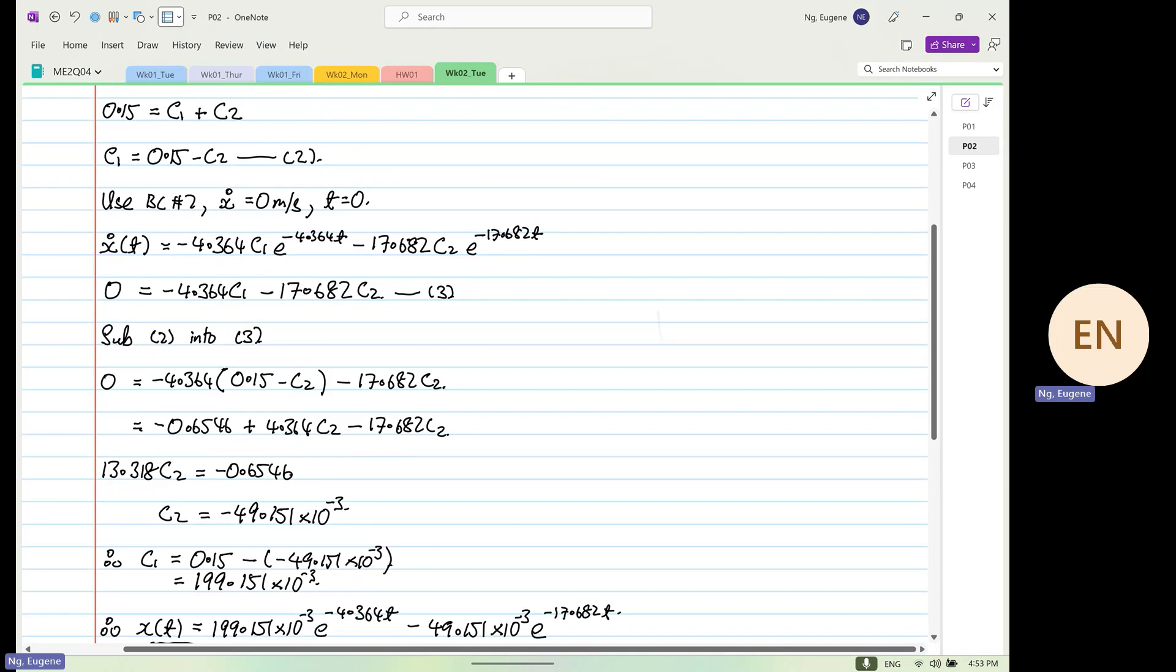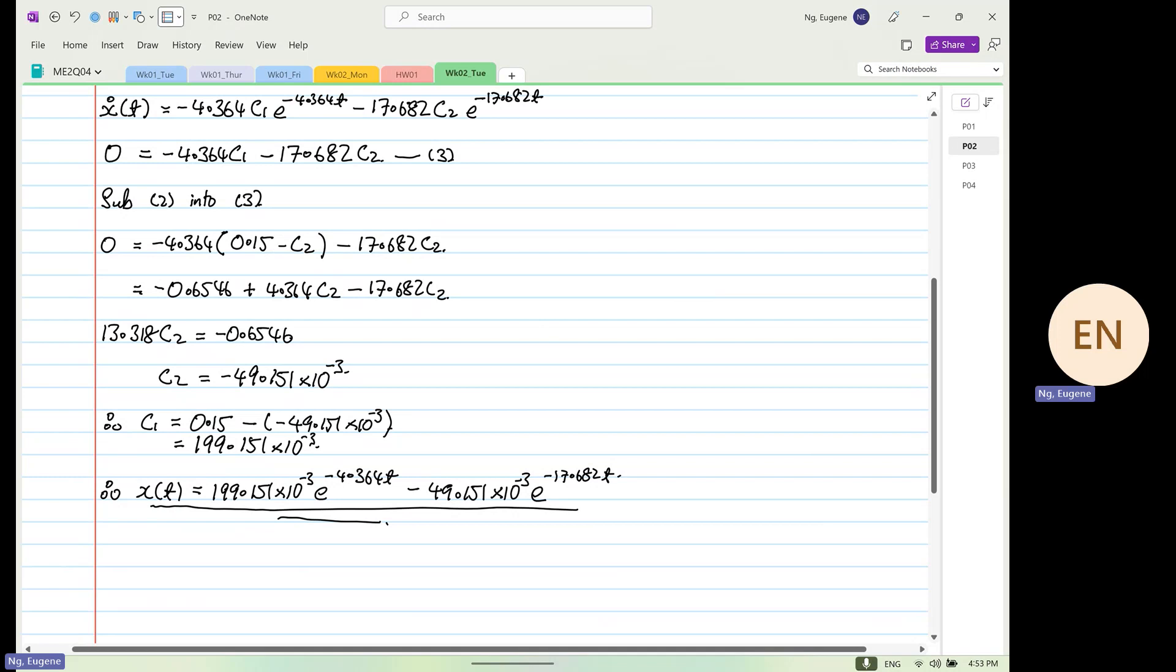From here, don't just stop. This is the solution, but you need to have an impression on how the graph will look like. If we were to sketch, this is x and this is time. The initial distance will be 0.15 and then it will be a slow decay. Now can someone tell me will this equation reach zero? Mathematically it means one thing, physically it means another thing. Now I'm going to show you something that can get me into trouble.